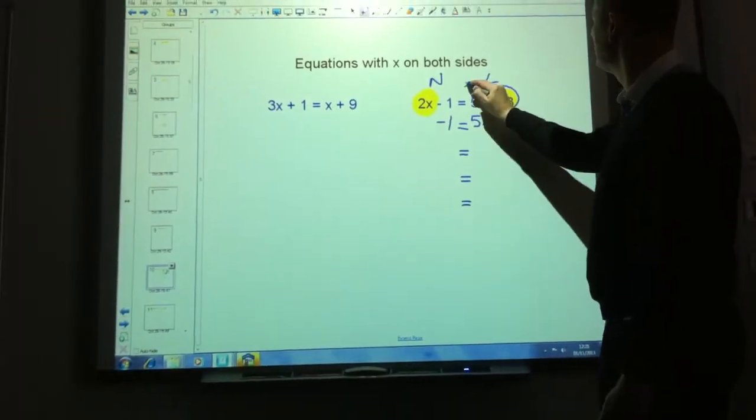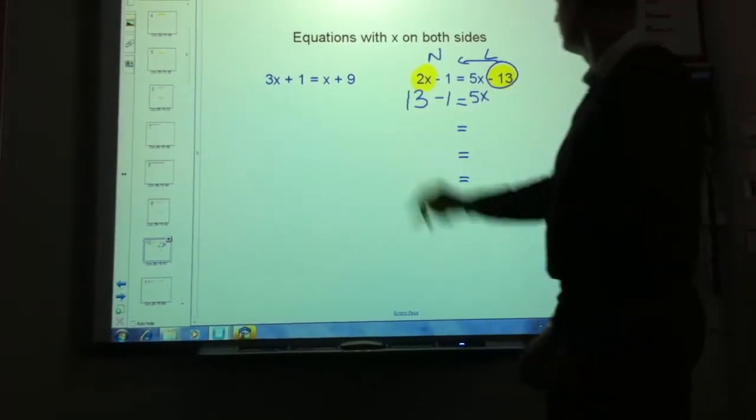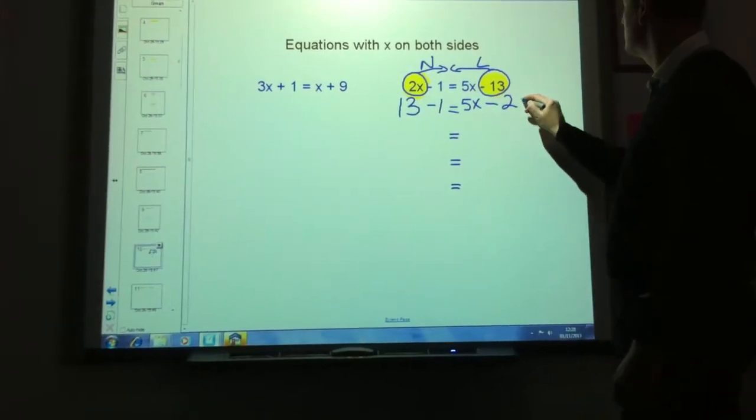Let's take the minus thirteen over here first and that becomes a plus thirteen. Let's take the two x across here and that becomes a minus two x.